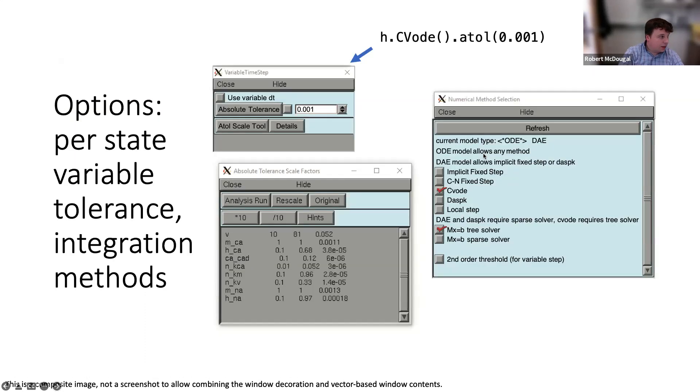When doing this, the error tolerance is not necessarily uniform. You can specify the tolerance with h.cvode().atol(). h.cvode().atol(10 to the negative 3) will set the tolerance to 10 to the negative 3. Pass a different number and it will use that.